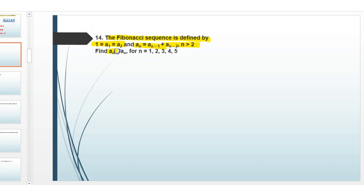Find An plus 1 divided by An for N equals 1, 2, 3, 4, 5. So first of all, we write the Nth term: An equals An minus 1 plus An minus 2.